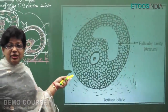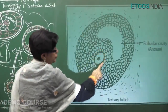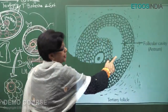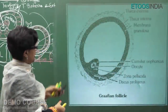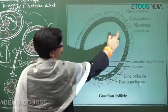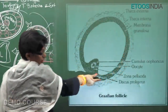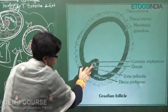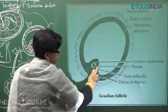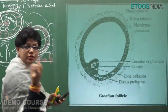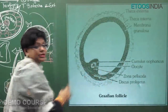In the tertiary follicle, the secondary oocyte arrested in metaphase 2 has formed the glycoprotein zona pellucida; the follicular cavity (antrum) has started forming with theca interna and theca externa. In the mature Graafian follicle, the antrum is large; theca interna and externa are present; follicular cells around are the membrana granulosa. The secondary oocyte is surrounded by the non-cellular zona pellucida, then the cumulus oophorus or corona radiata, and the stalk of follicular cells connecting it to the wall is the discus proligerus or germ hill.